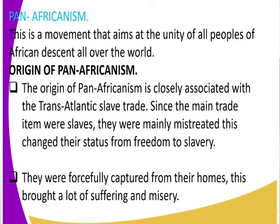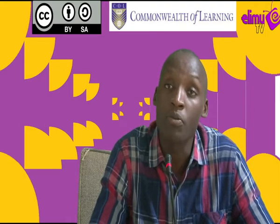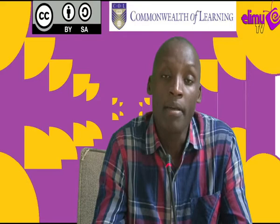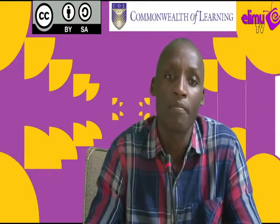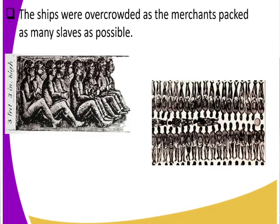They were forcefully captured from their homes. We looked at the social impacts of slave trade back in Form Two — it really caused a lot of misery and suffering to their families. In the ships, they were overcrowded, as the merchants could pack as many slaves as possible. The merchants were after profit, so in a ship supposed to carry around 200 people, they could pack over 1,000 slaves. Get to look at that image — how they are seated, very closely packed, with others forced to lie down.